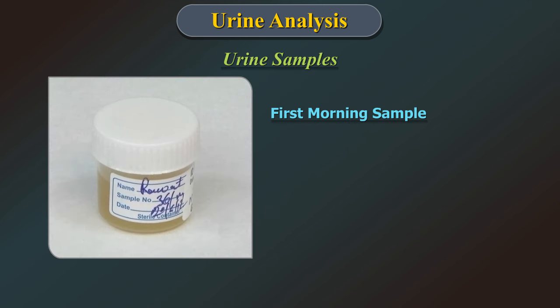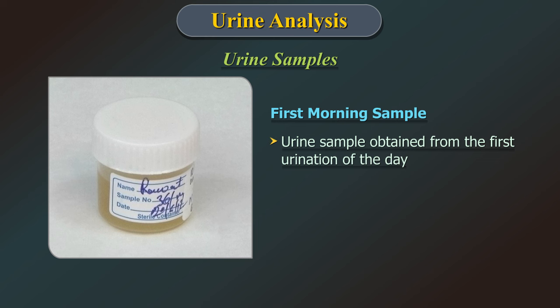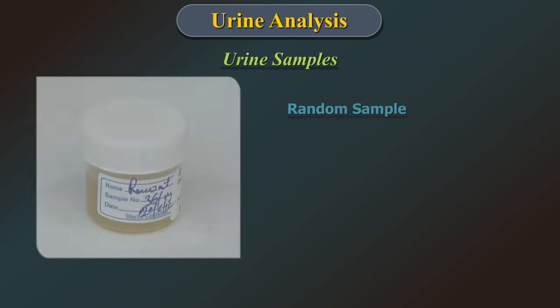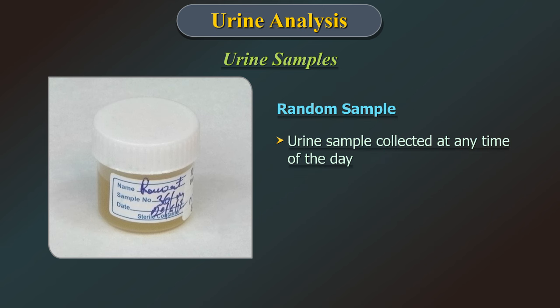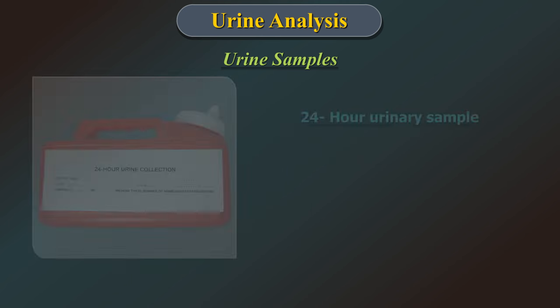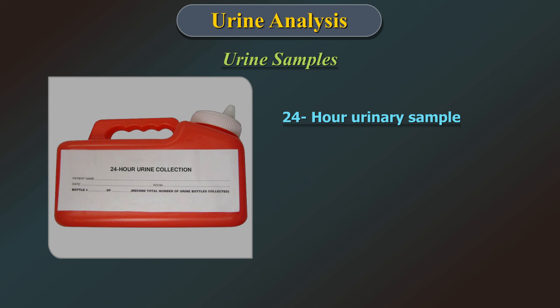The first morning sample: urine obtained from the first urination of the day is the most concentrated sample and best for routine examination. The random sample is urine collected at any time of the day. It is most convenient and can also be used for chemical and microscopic examination.